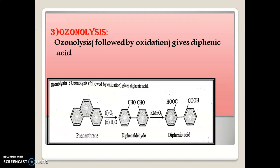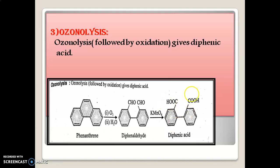Ozonolysis: Ozonolysis, followed by oxidation, gives diphenic acid — the same final product as in the oxidation reaction. When phenanthrene is reacted with ozone and water, it gives an intermediate compound diphenaldehyde, where two aldehyde groups are attached. When this diphenaldehyde is further treated with KMnO4, it gives diphenic acid as the final product. Both oxidation and ozonolysis thus yield diphenic acid as the major product.